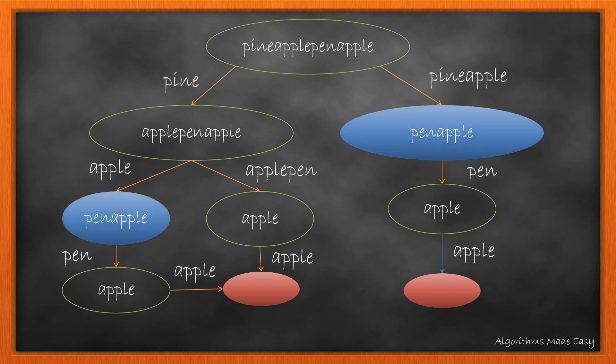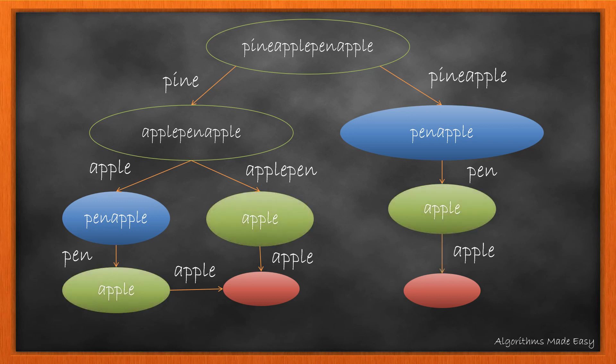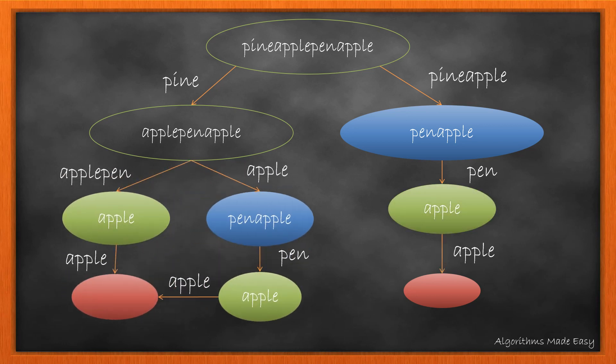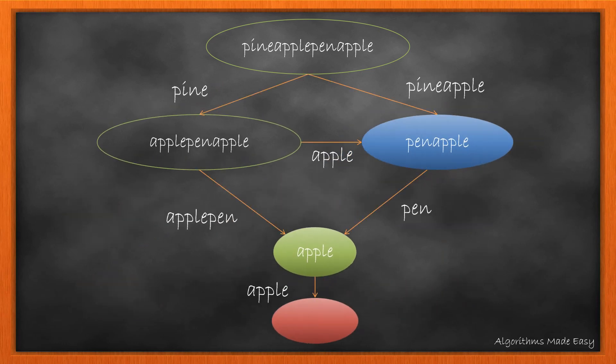For this example, we can see we have done calculations twice for pen-apple and thrice for apple. If instead of calculating the result for them every time, we reuse the result, the diagram would have looked like this.